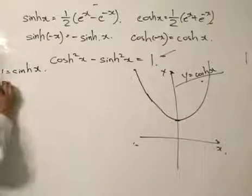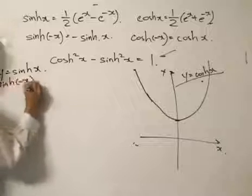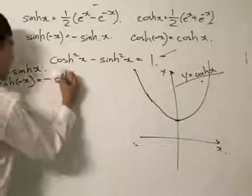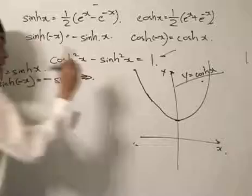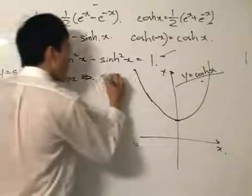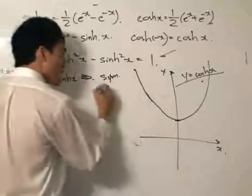What do we know? Properties of the sinh function. Put in a minus x, you will get a minus sinh x. What does that say? It implies symmetry at origin.